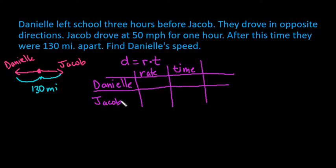Just remember that what we need to do is we need to find the rate for both Danielle and Jacob, the time for both Danielle and Jacob, and our distance is going to equal the rate times the time. So the total distance that Danielle traveled plus the total distance that Jacob traveled is going to give us 130 miles. So let's find the information to fill in this chart. Danielle, it tells us, that's what we're finding.